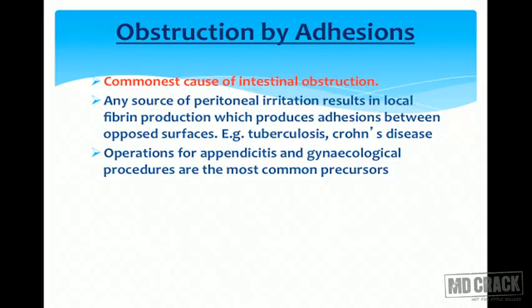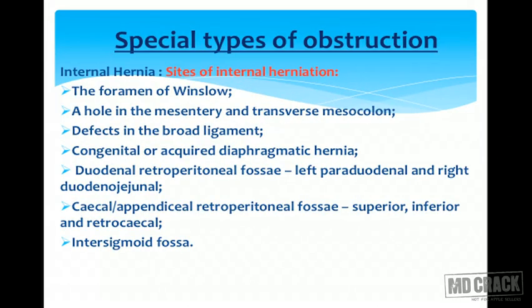Any source of peritoneal irritation results in local fibrin production, which produces adhesions between the opposed surfaces — for example, tuberculosis or Crohn's disease. Operations for appendicitis and gynecological procedures are the most common precursors.